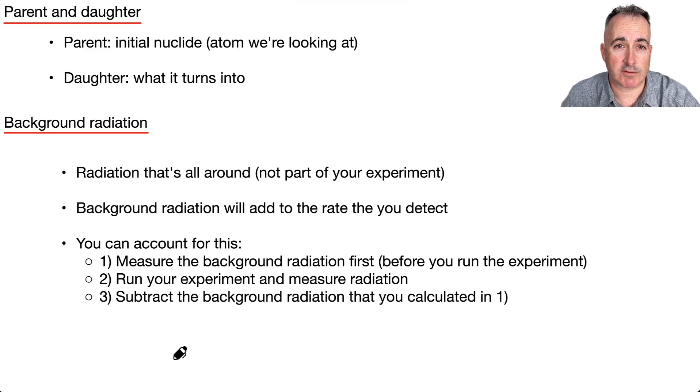We define some terms. First of all, we have something called a parent. That's the initial nuclide, that's what you start with. And then you have something called a daughter, which is what this parent turns into. If the parent changes into another element, well, that's called the daughter.